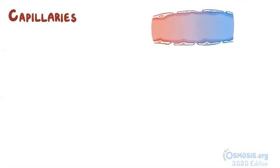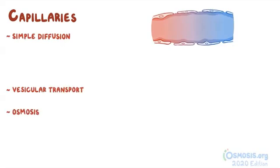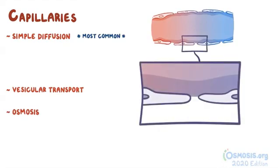Here, substances can cross the capillaries in three ways. There's simple diffusion, vesicular transport, and osmosis. But overall, the most common type is simple diffusion. Normally, some substances can diffuse through the clefts and between the endothelial cells, but only if they're water-soluble. So, molecules like ions, glucose, and amino acids can readily pass through these openings.